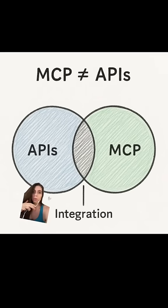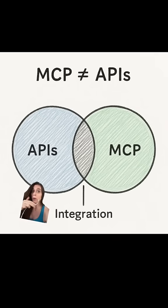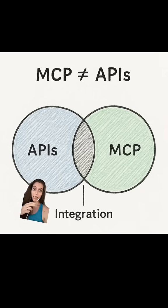Ignoring these risks means exposing your LLM environment in a way that an API just never would. Because MCP — Model Context Protocol — is a protocol. It's not a product.